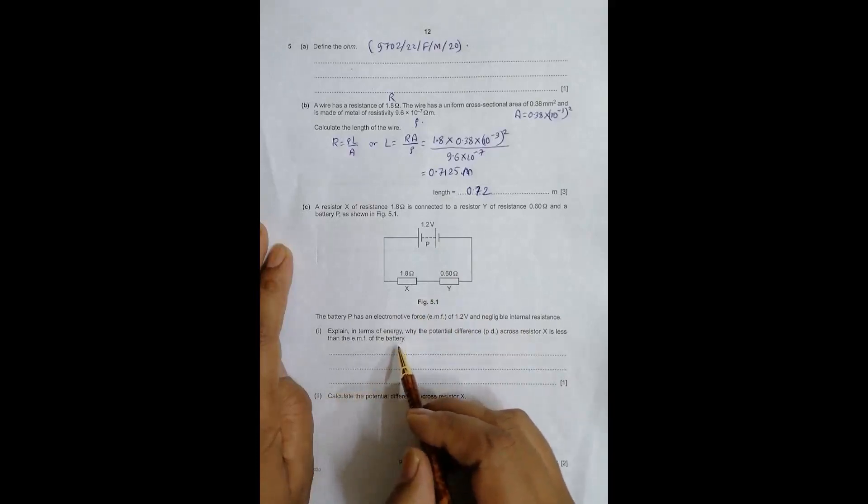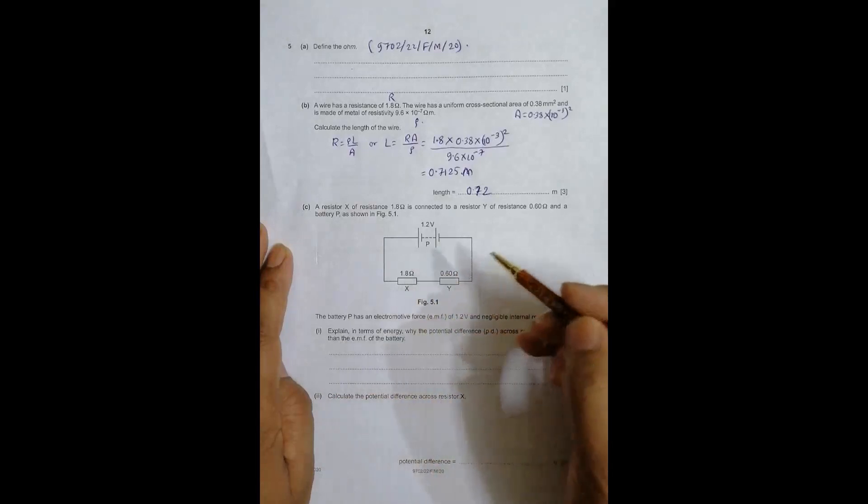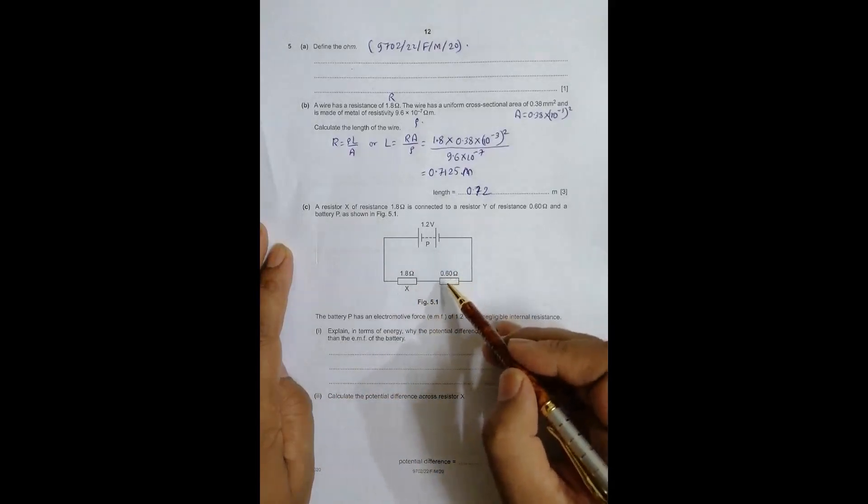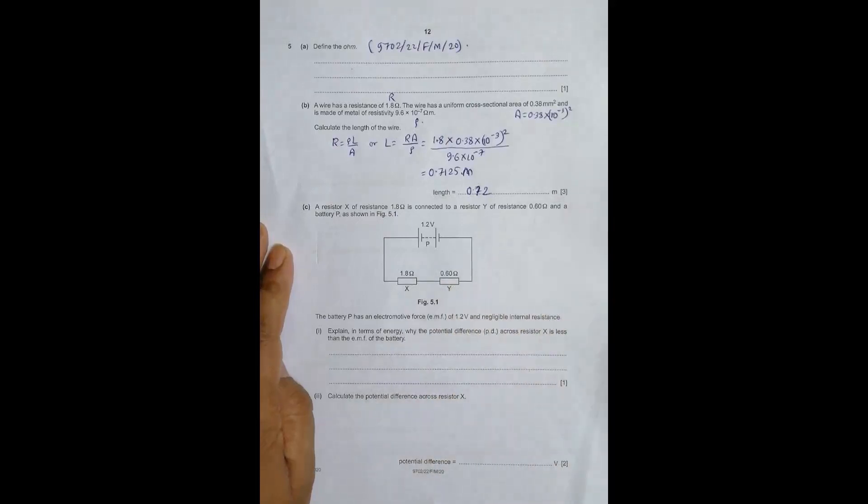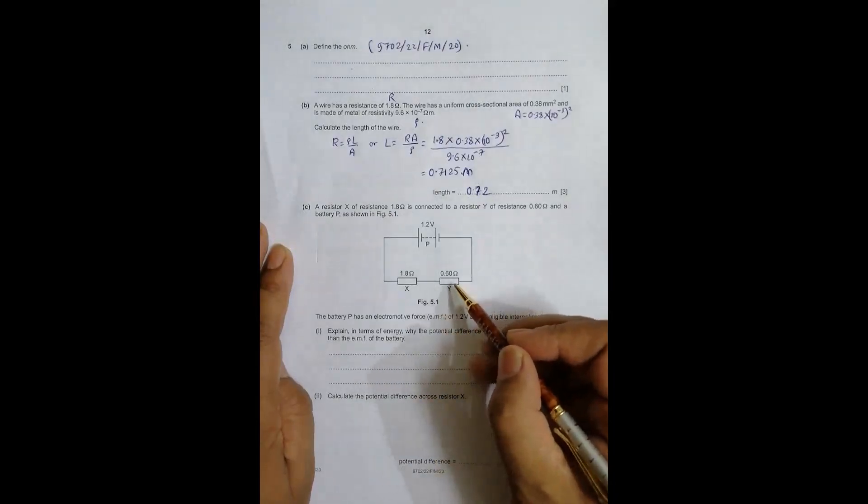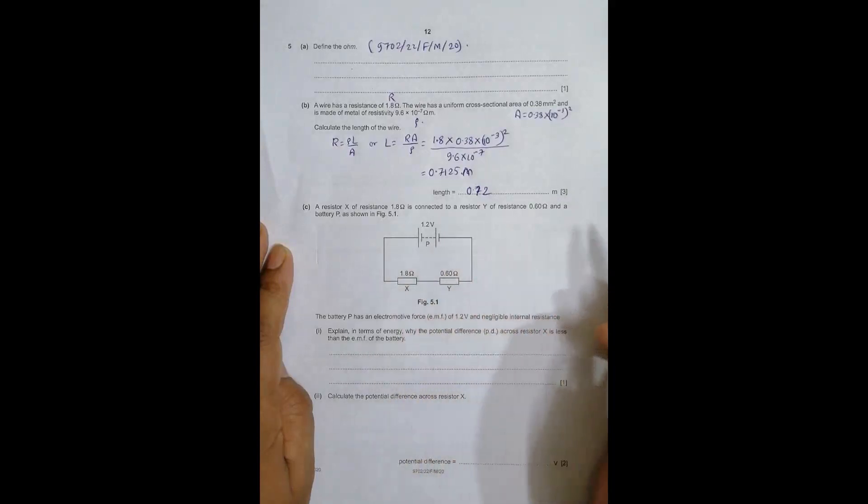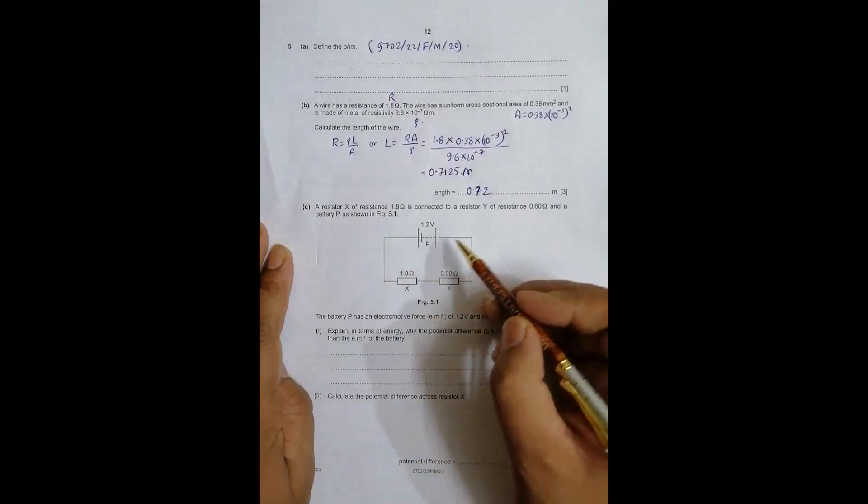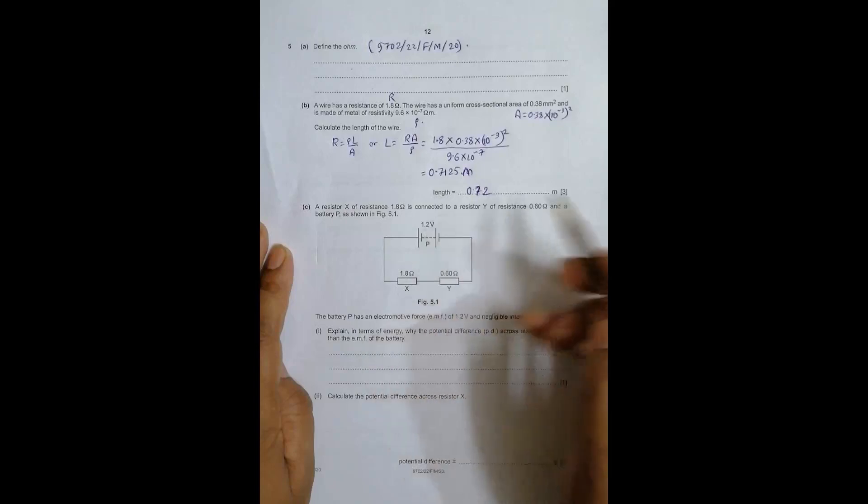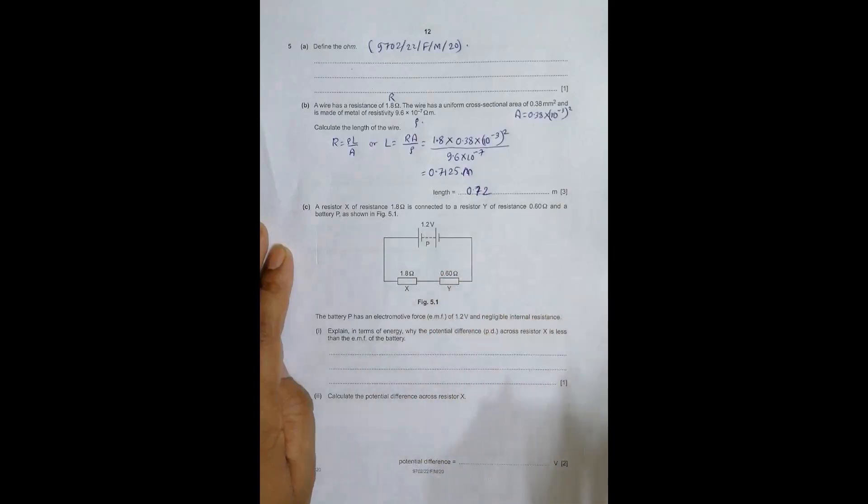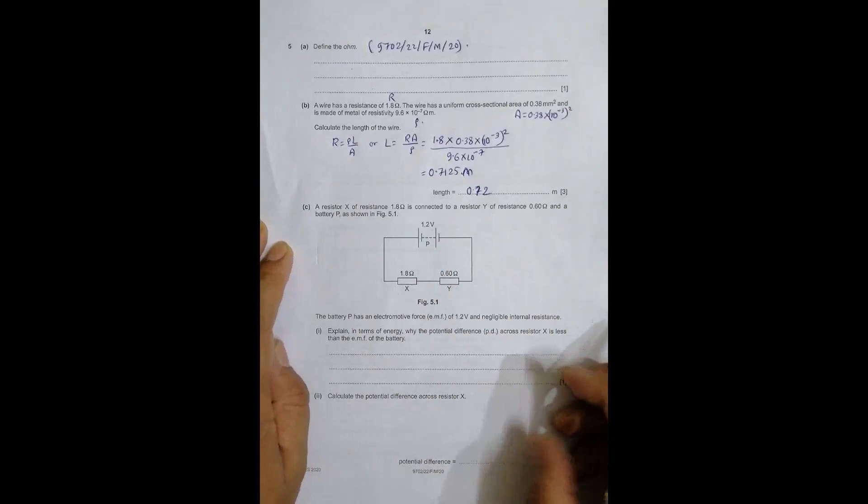The reason is simple: some energy is spent on this resistor as well. When you have resistance, they release heat energy, so some energy is wasted here. There is no other means of wasting energy since it has negligible internal resistance, so the only waste is at resistor Y.